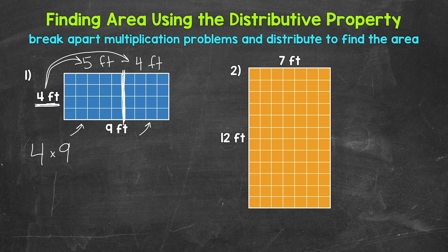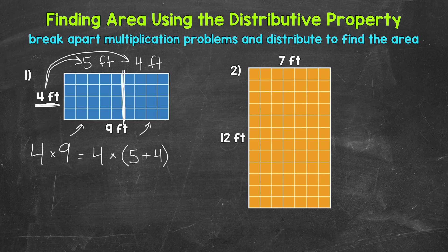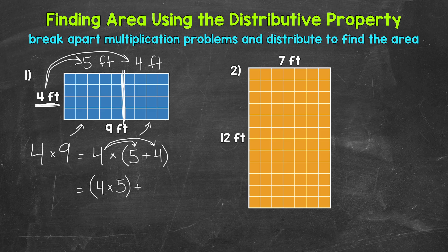Let's go back to our original problem, 4 times 9. But we broke 9 up into 5 and 4, so we can rewrite this as 4 times, and then in parentheses, 5 plus 4. We broke apart the 9 in our multiplication problem. Now we distribute — we take the 4 to the 5 and the 4. So we do 4 times 5 and 4 times 4, and then we add those. This equals 4 times 5 plus 4 times 4, using parentheses to group our multiplication facts.